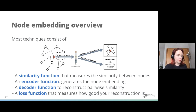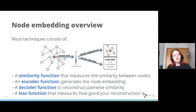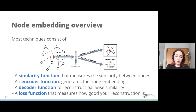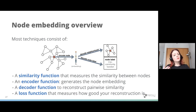Generally, when talking about node embeddings, most methods require four things: a similarity function measuring how similar any two nodes are; an encoder function that generates the node embedding; a decoder function that reconstructs the pairwise similarity; and a loss function measuring how good that reconstruction is. Just like training skip-gram to learn a vector so I can predict the next word — I need a loss function to know if my prediction is good. Every node embedding generally has these steps: a way to embed, a way to decode, and a way to measure whether the embedding is any good.